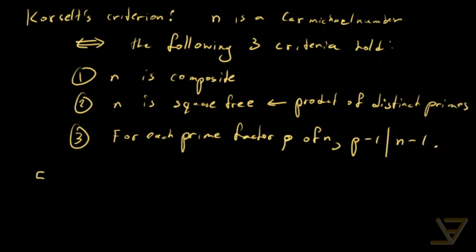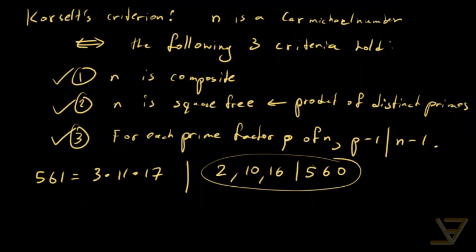Let's check this for 561, which equals 3 × 11 × 17. It's certainly composite. It's square free. And we can check that 2, 10, and 16 all divide 560. So the third criterion holds as well. Thanks for watching, and I'll see you next time.